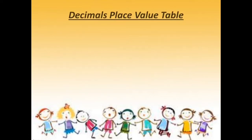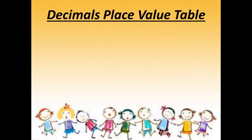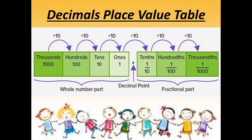Next is the decimals place value table. A decimal place value table helps to find the place value of the digits in a decimal number. In this table, the whole number part is written to the left-hand side of the decimal point and the fractional part is written to the right-hand side. In the whole number part, from the right, four places form the ones, tens, hundreds, and thousands period. In the decimal part, from the left, three places form the tenths, hundredths, and thousandths period. Hopefully it is clear to you.